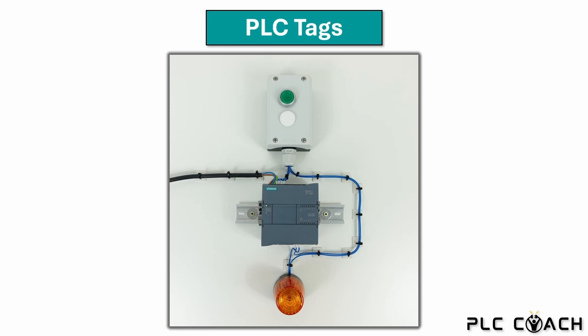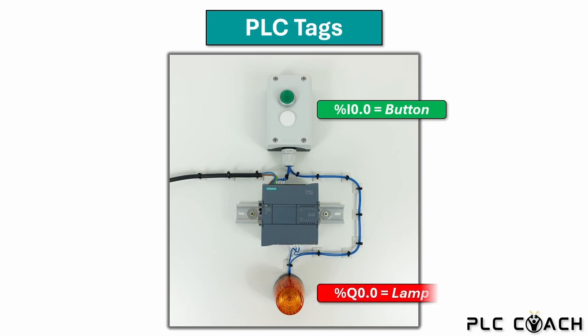The green push button is wired to input I0.0, so its absolute address is %I0.0. For its symbolic address, I will use the easy name 'button'. The lamp is wired to output Q0.0, so its absolute address is %Q0.0. For its symbolic address, I will use the easy name 'lamp'.